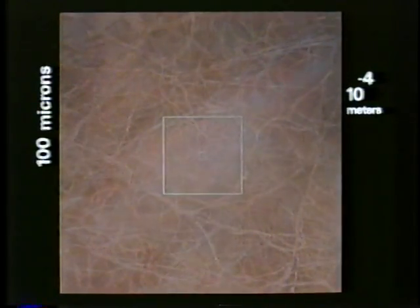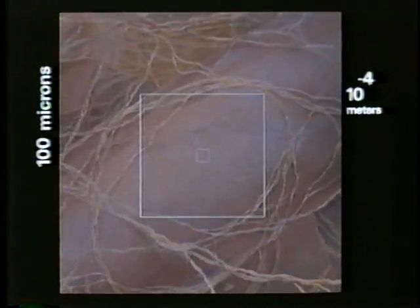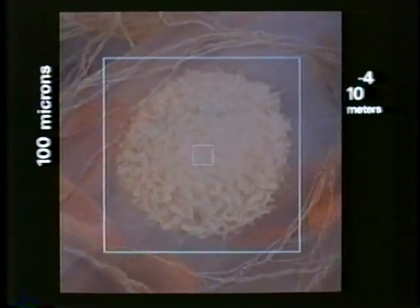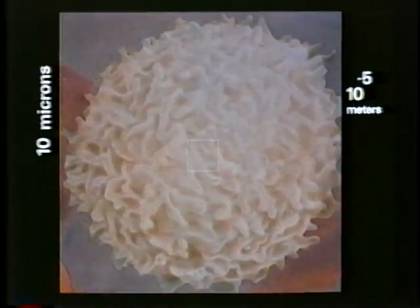Crossing layer after layer from the outermost dead cells into a tiny blood vessel within. Skin layers vanish in turn. An outer layer of cells. Felty collagen. The capillary containing red blood cells and a white lymphocyte. We enter the white cell. Among its vital organelles the porous wall of the cell nucleus appears.